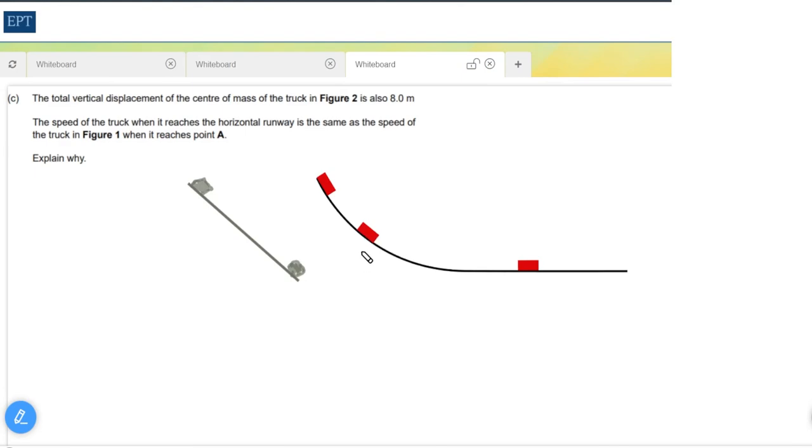Part C picks up where part B finished off and suggests that as long as our trolley or our mass falls the same height, it doesn't matter which path it takes. They are going to have the same speed at the end. And of course this is true because both masses are dropping the same height, therefore gaining the same amount of kinetic energy, i.e. the same as the potential energy that they've lost. Therefore they will both have the same kinetic energy increase at the bottom and therefore both have the same speed.